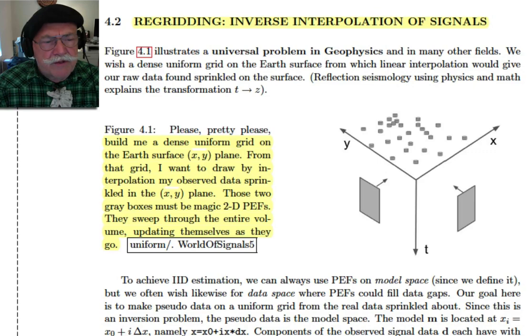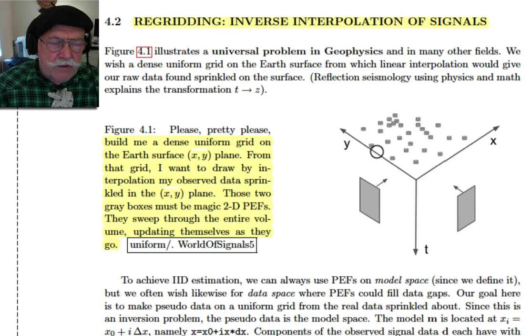The kind of answer here for the three-dimensional space, I will read for you this caption, is we want to build a dense uniform grid on the Earth's surface plane. So up here, we're going to build a uniform grid. And from this grid, if we define the data correctly, we're going to make pseudo data on that grid. If we get everything working correctly, we'll be able to take linear interpolation, we'll take our observed data from the pseudo data. Well, it may not work perfectly, but we're going to try and do the best we can to get the real data off of the pseudo data. The pseudo data is going to be on the uniform mesh. So the method that I'm going to describe involves two things. You have to take a prediction error filter and push it through the volume. And you take this prediction error filter, and you push it through the volume that direction.